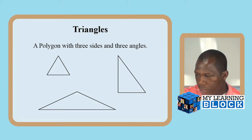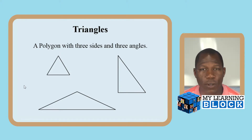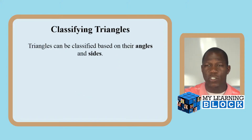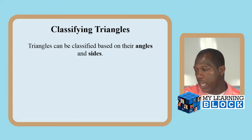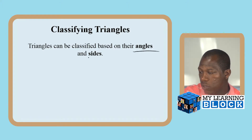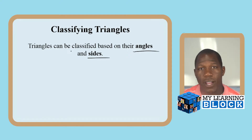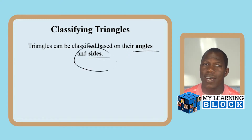Today we're going to actually classify our triangles. Triangles can be classified two specific ways: one is based on their angles and the other is based on their sides. Today we're going to focus on classifying triangles based on their sides.